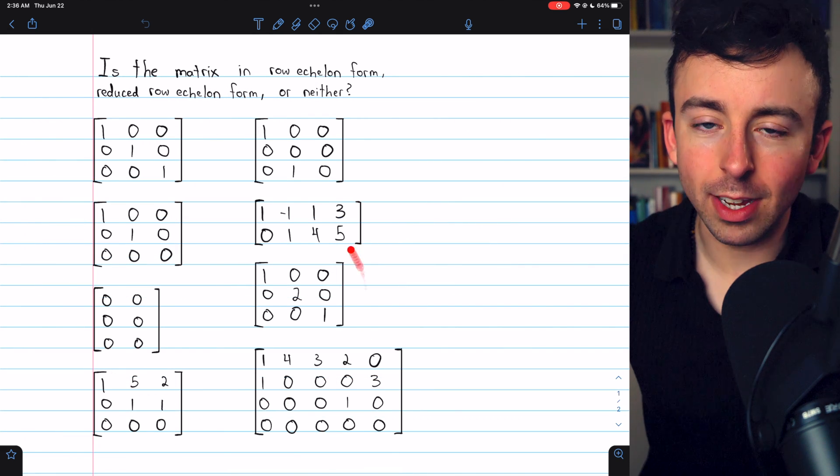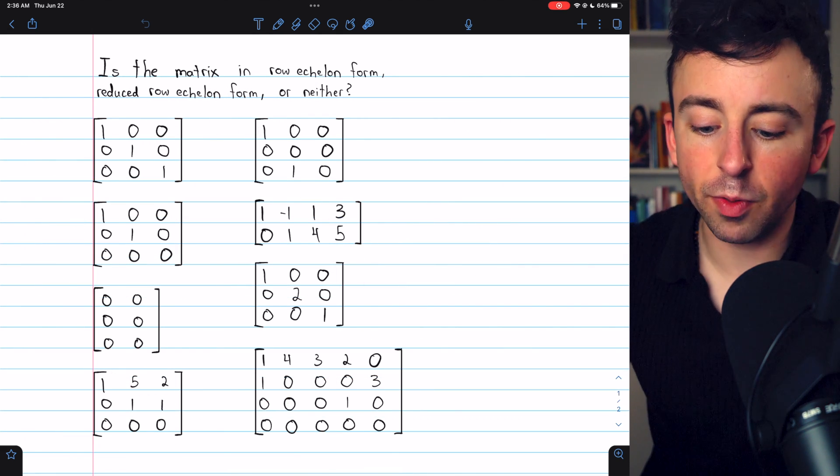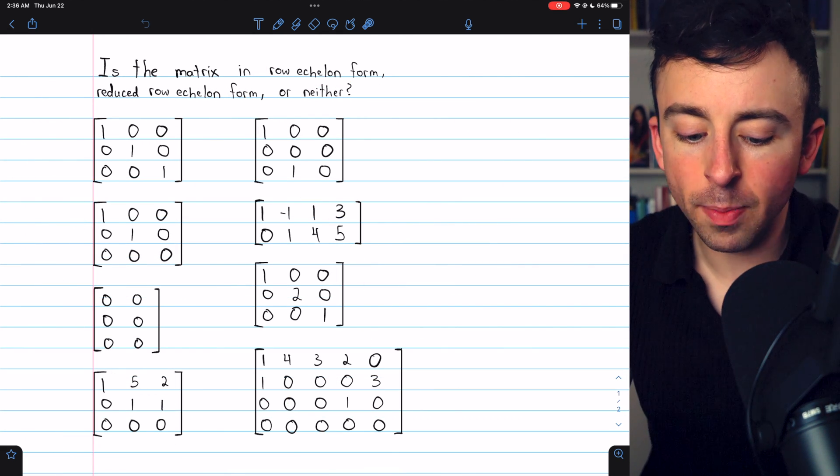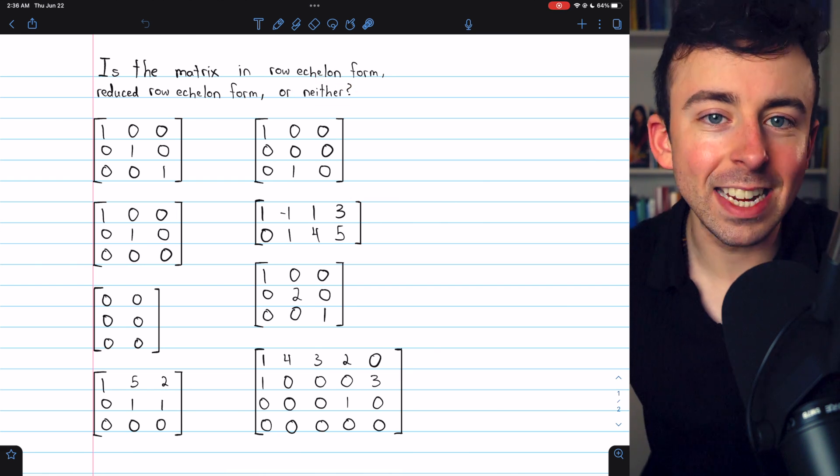Here we have eight matrices. For each one, we want to identify whether it's in row echelon form, reduced row echelon form, or neither.